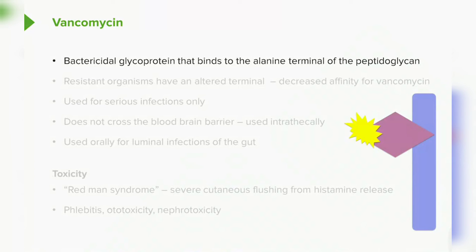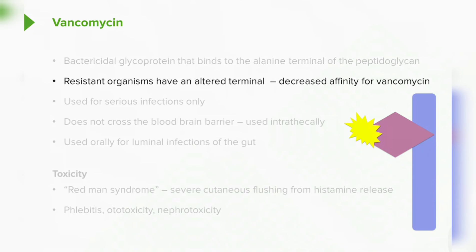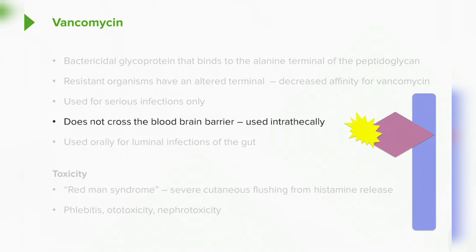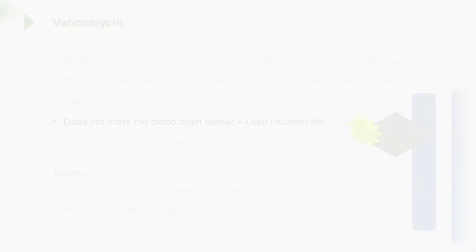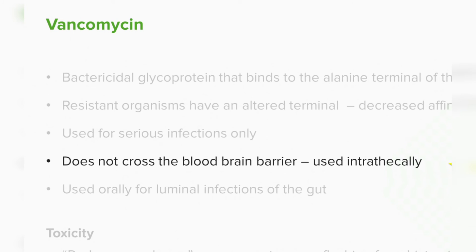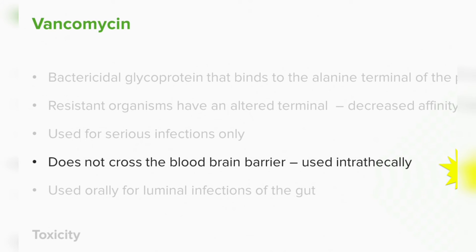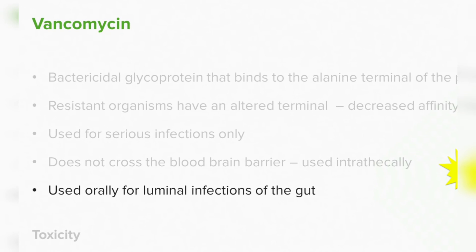Vancomycin binds to a bacterial glycoprotein on the alanine surface of the peptidoglycan. Resistant organisms have an altered terminal, decreasing affinity for vancomycin. We only use vancomycin for very serious infections. It is actually a large molecule and does not cross the blood-brain barrier, so for spinal or brain infections we administer it intrathecally. We use it orally for luminal gut infections because it is not absorbed across the gut wall, so it stays inside the gut and is quite effective there.